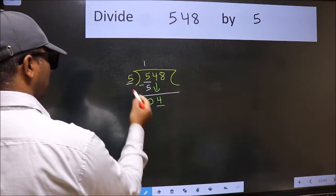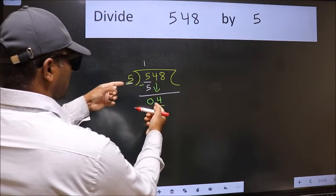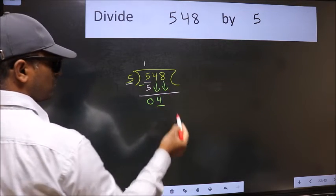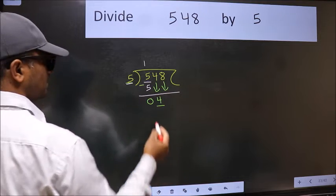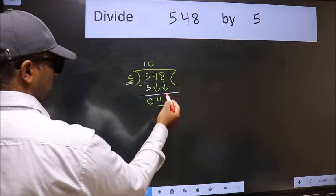Now here we have 4 and here 5. 4 is smaller than 5. So we should bring down the second number. And the rule to bring down second number is we should put 0 here. Then only we can bring this number down.